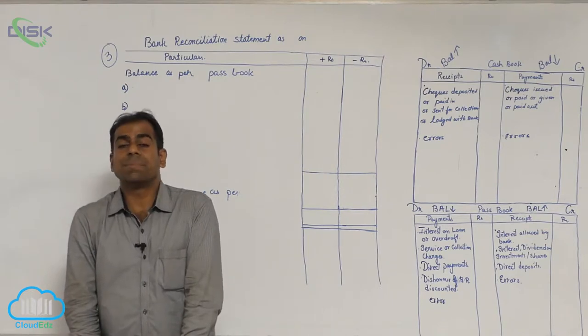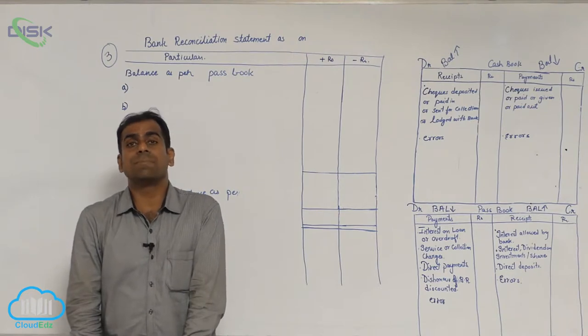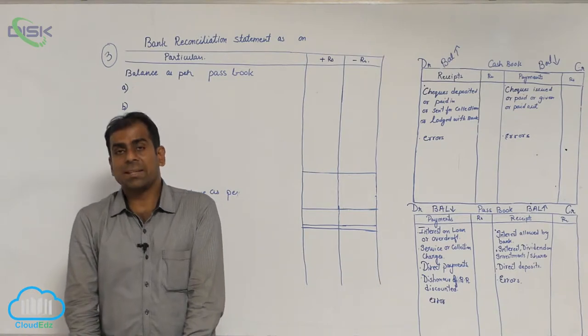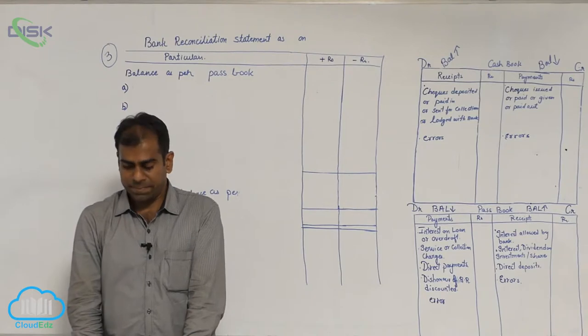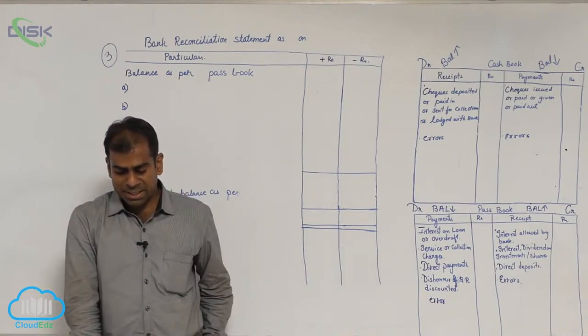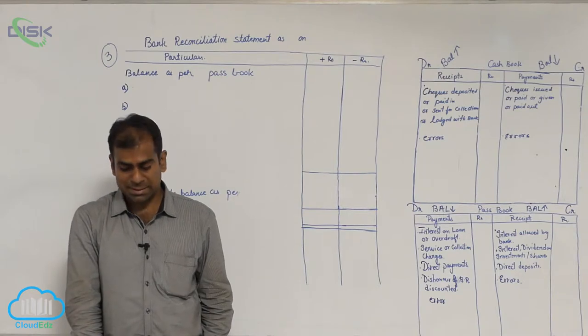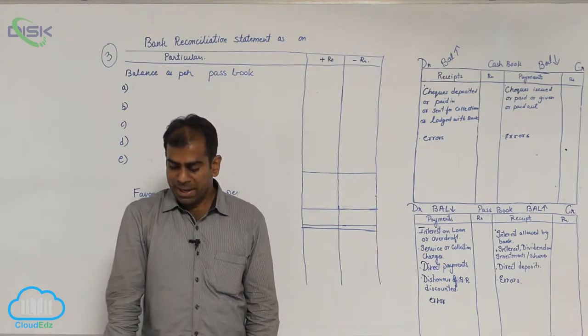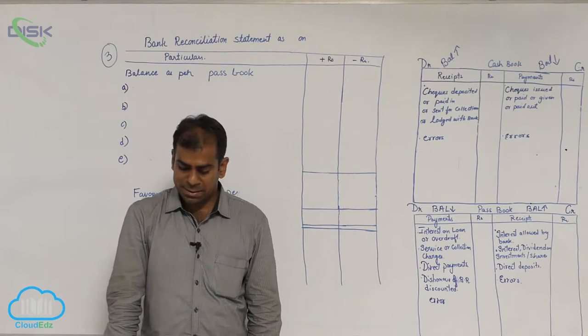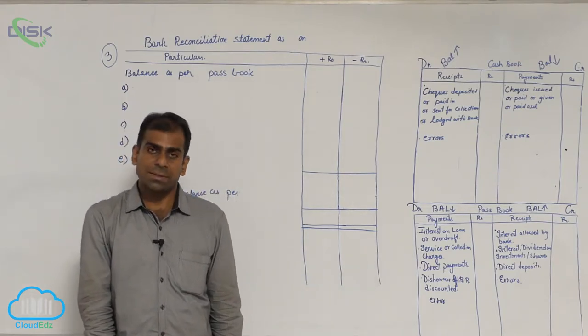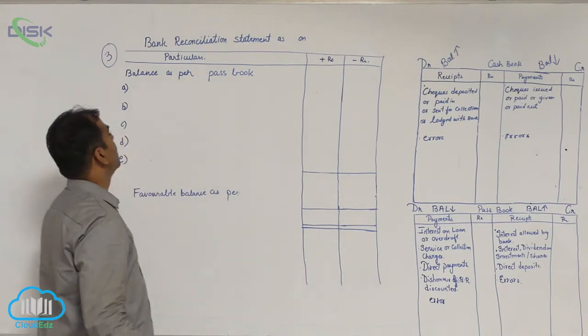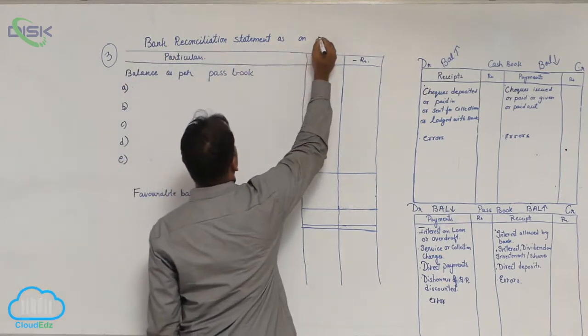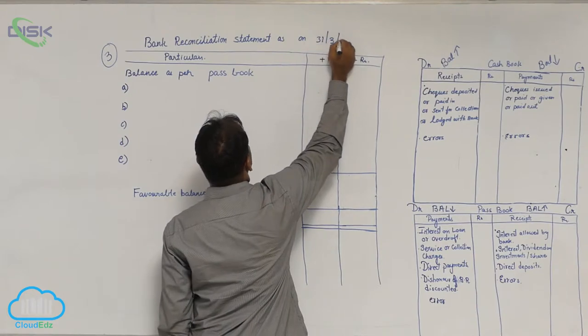Bank balance as per passbook. So you are again given passbook balance is Rs. 8,900. There is a disagreement between cashbook and passbook balances as on 31st March 2014. Prepare a bank reconciliation statement by considering following transactions. So first of all, you have to prepare on which date the BRS. So we are going to prepare BRS as on 31st March 2014.